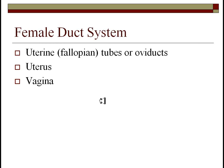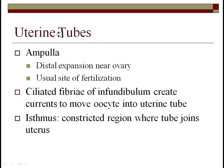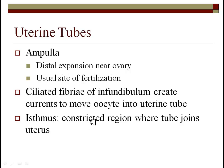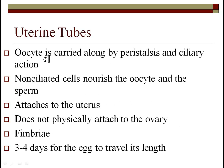Looking at the female duct system, you have the uterine or fallopian tubes, the uterus, and the vagina. The uterine tubes have a wide portion right next to the ovaries called the ampulla — typically the site of fertilization. The uterine tubes have fimbriae, which are finger-like ciliated extensions that create a current to pull the egg in. The ovaries do not actually attach to the fallopian tube, so occasionally an egg can miss it and be fertilized elsewhere, causing an ectopic pregnancy. Further down the uterine tube is the isthmus, a constricted region right before the uterus.